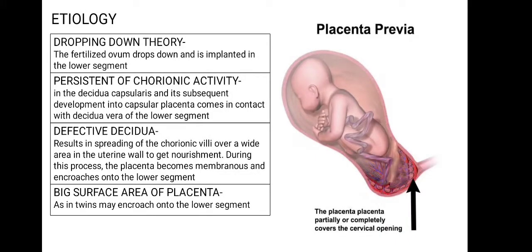The exact cause of this implantation of the placenta in the lower segment is not known, but the following theories are postulated. The first is the dropping down theory — according to this, the fertilized ovum drops down and is implanted in the lower segment. Normally fertilization occurs in the fallopian tube and the fertilized ovum moves towards the uterus and implants in the upper segment, but in placenta previa it drops into the lower uterine segment.